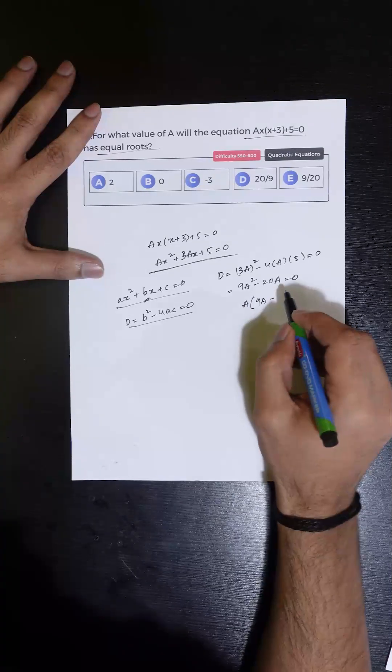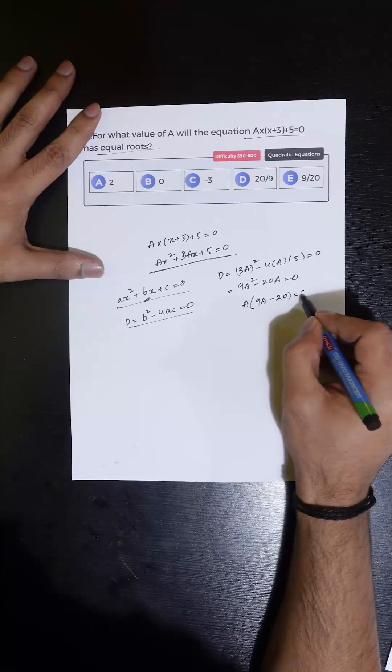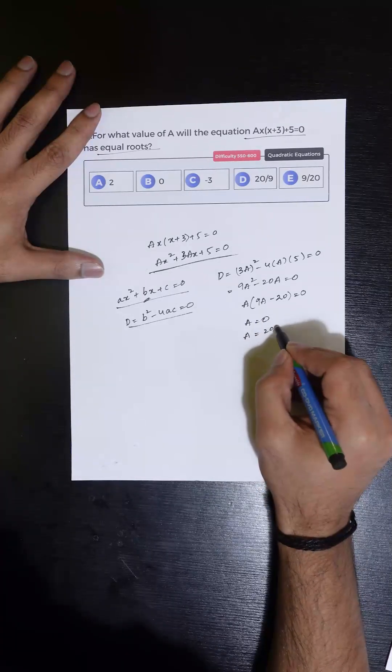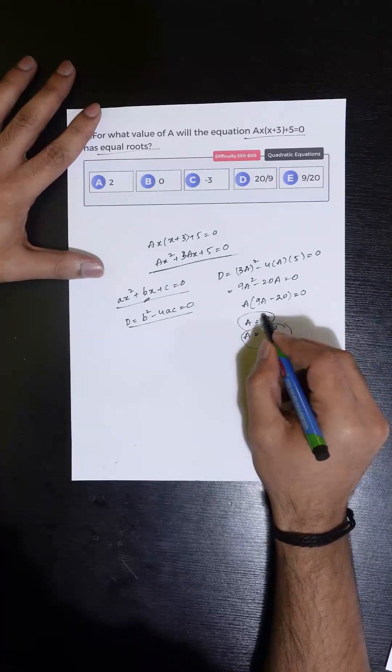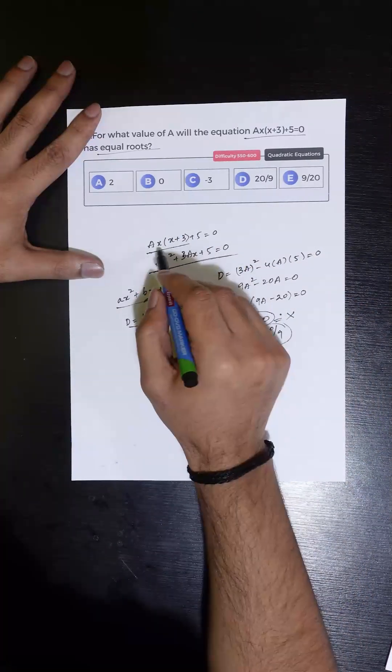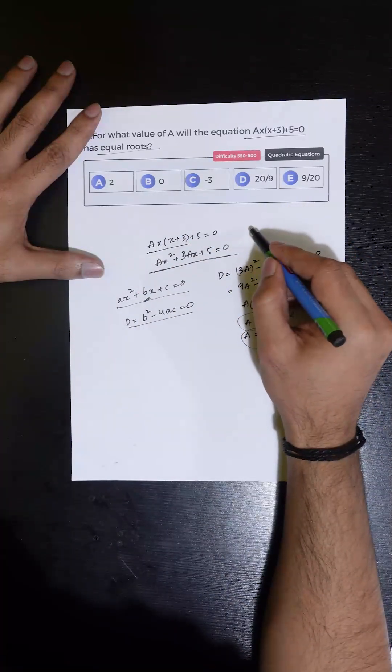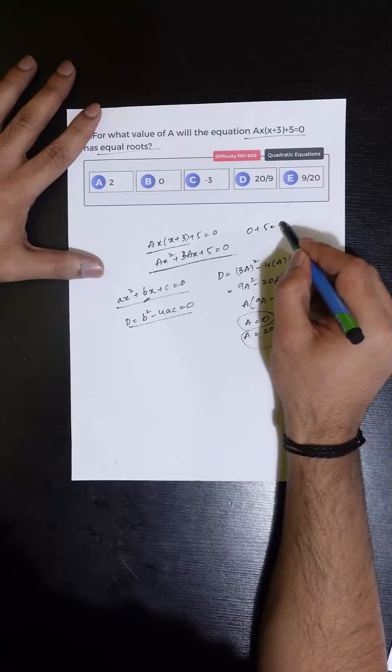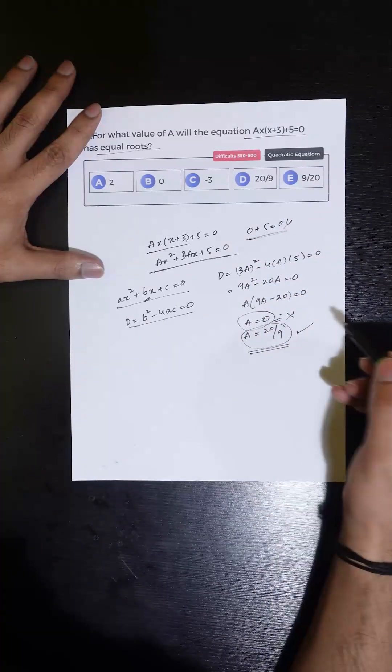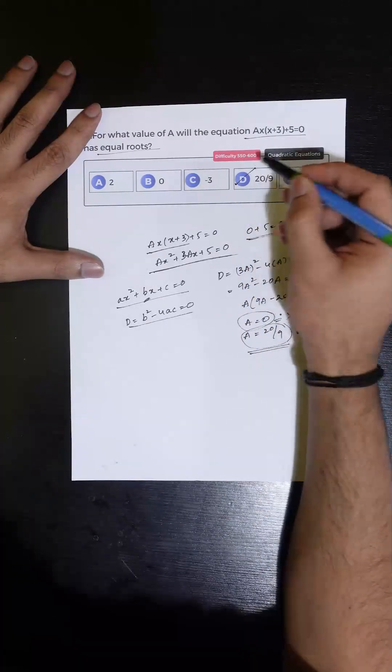So the value of A can be either 0 or 20 by 9, but the value of A equal to 0 must be eliminated because when we substitute the value of A to be 0 we get 0 plus 5 is equal to 0, which is not possible. So the only possible value of A is 20 by 9, and the correct answer is Option D.